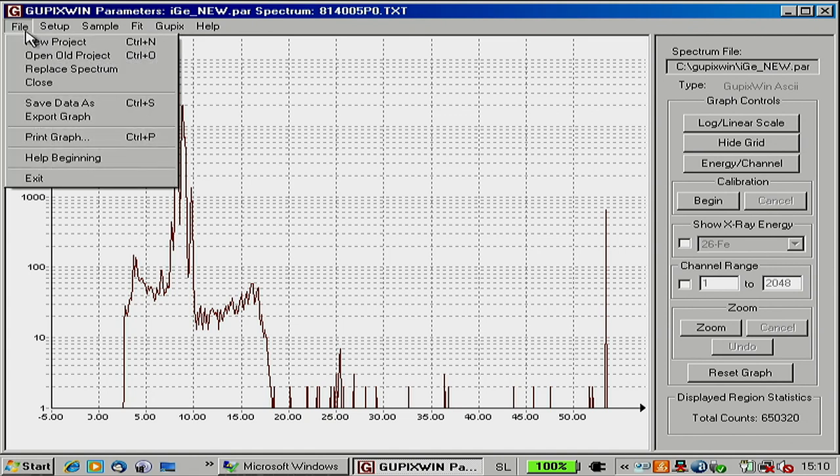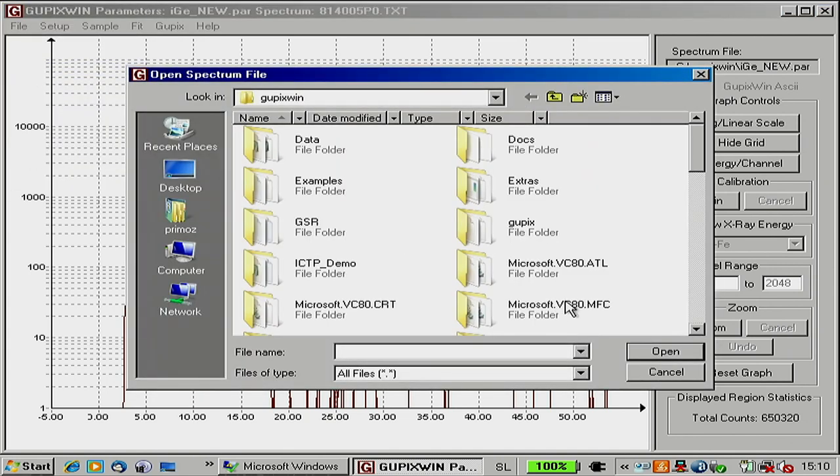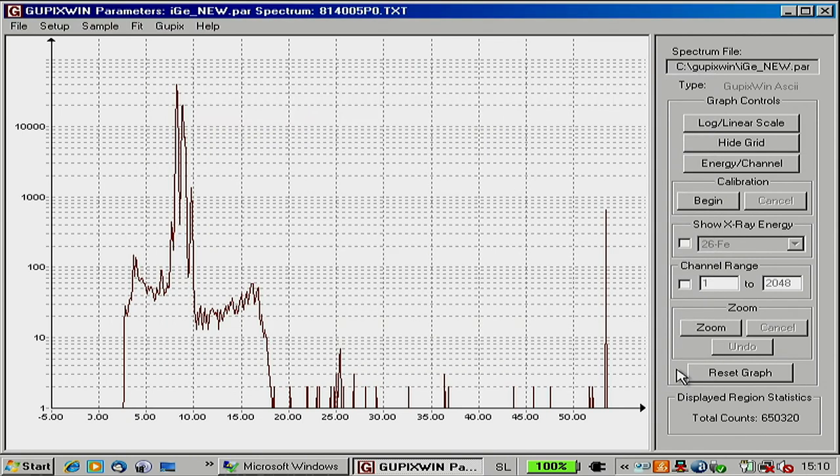Now I can replace spectrum. You select spectrum. I will try to fit the one that is already there. So the name of the spectrum you see at the top, 814005 and so on. So what is it? It's an alloy. It's naval brass. It's NIST standard. We are using it quite often.